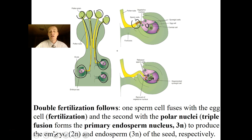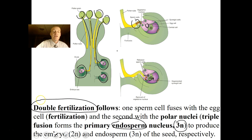This is called double fertilization — a unique characteristic in flowering plants. One sperm cell fuses with an egg; the second sperm cell fuses with those polar nuclei — two nuclei — forming a triploid structure known as the endosperm. It's kind of rare to see a triploid structure, but in flowering plants three nuclei fuse together to produce the endosperm.